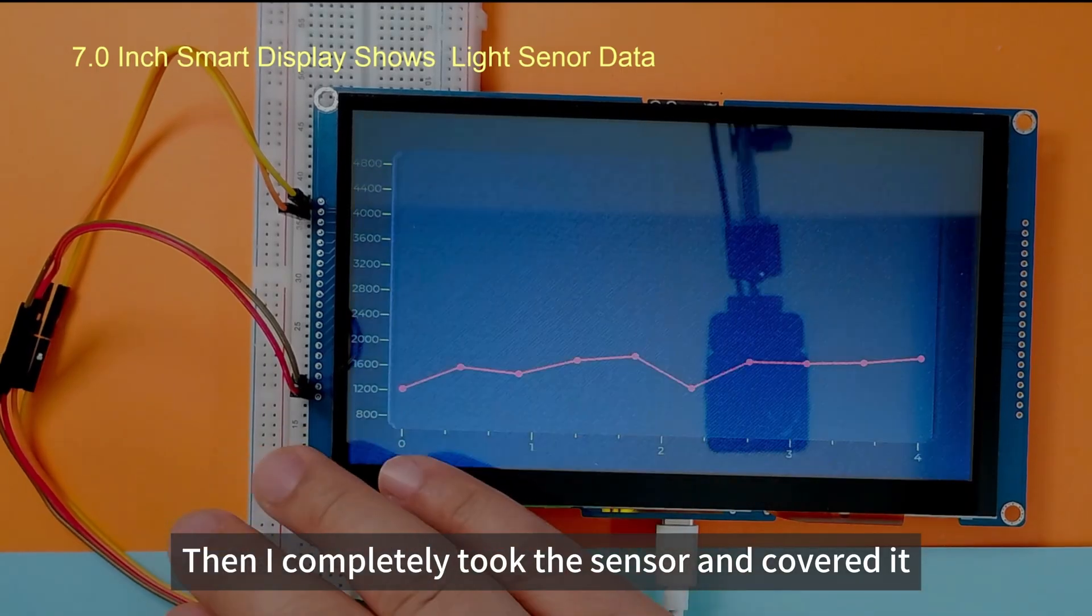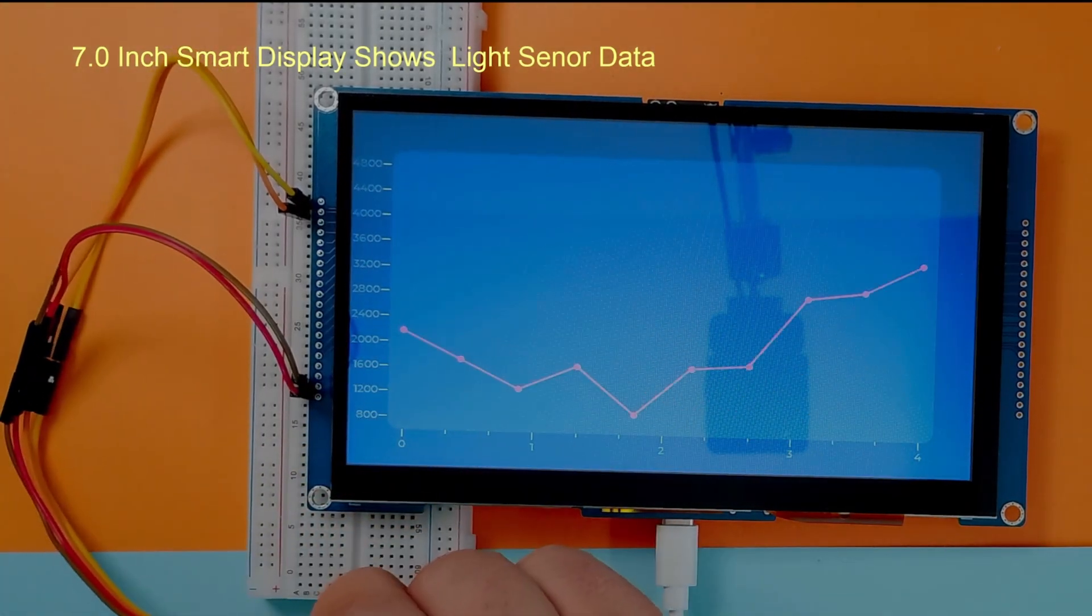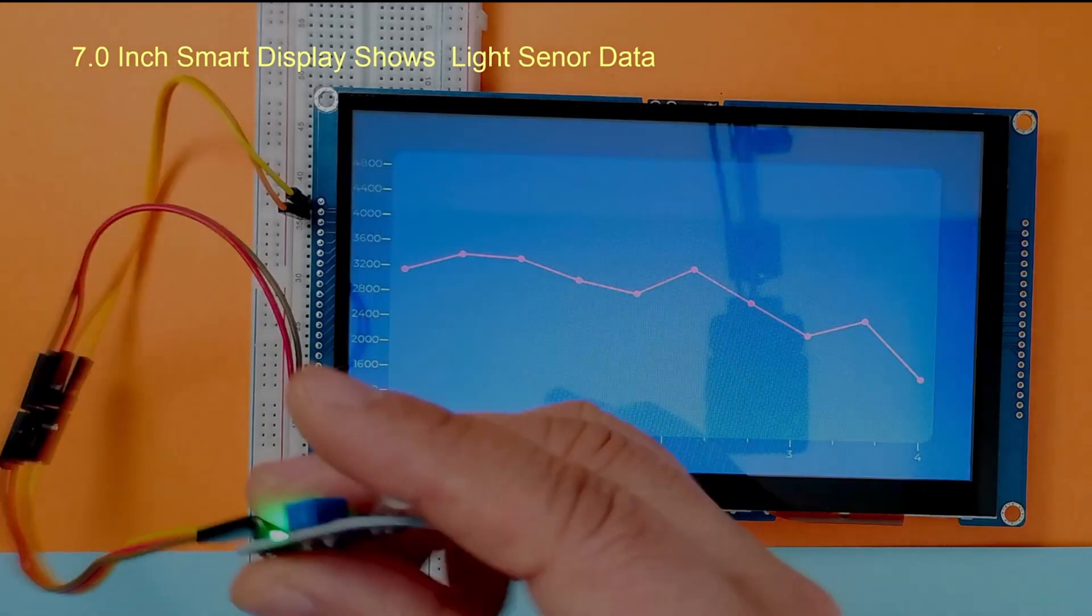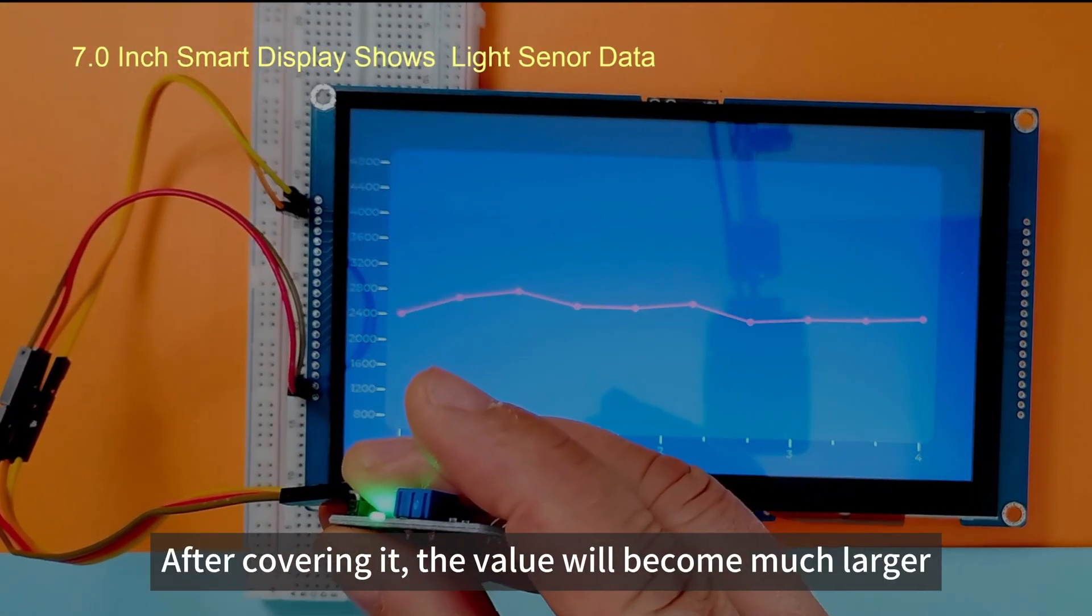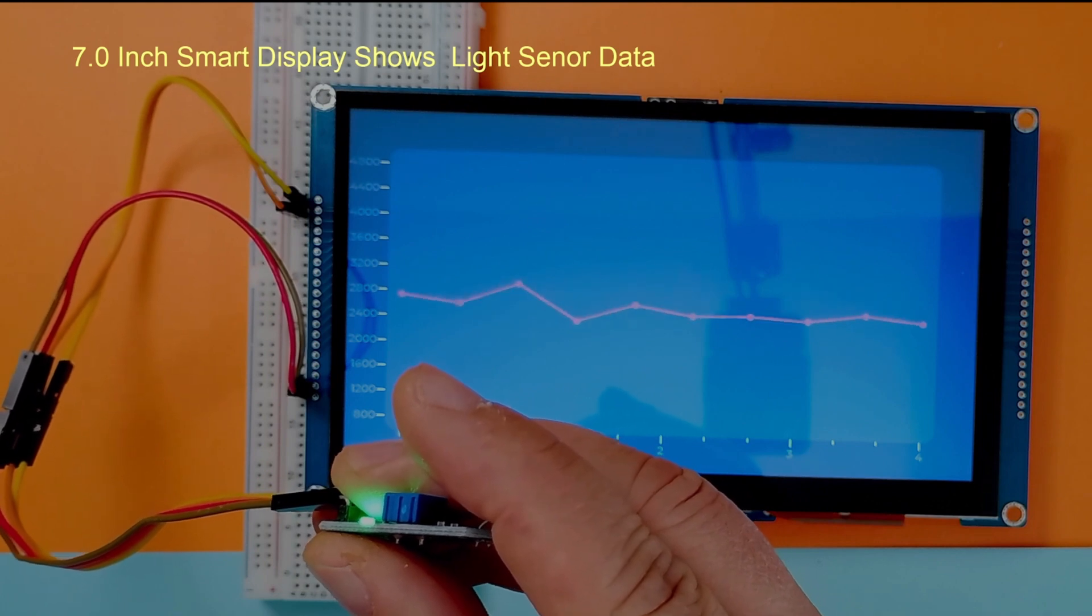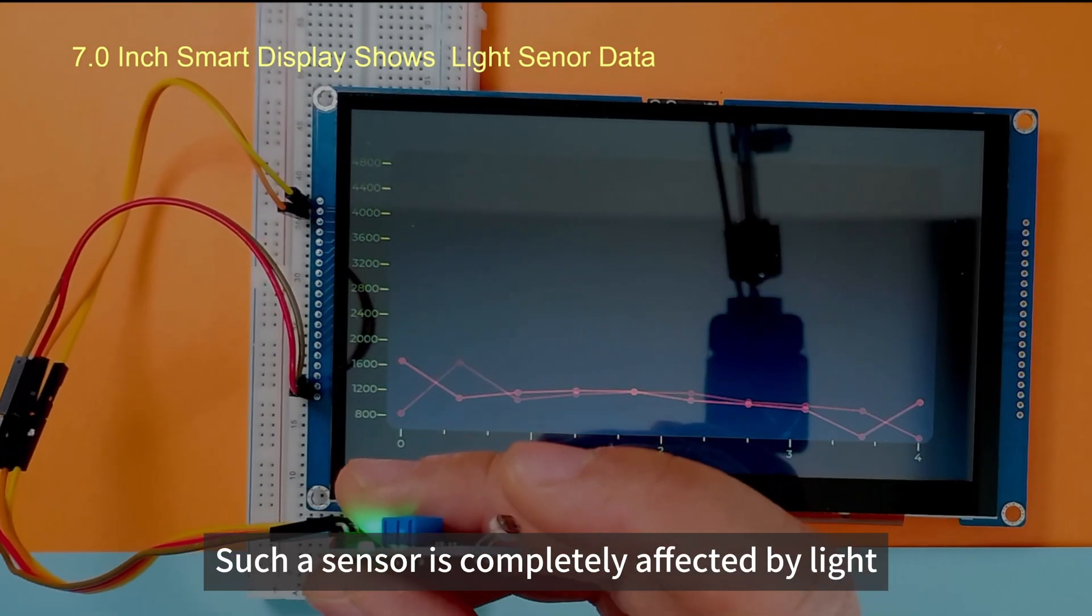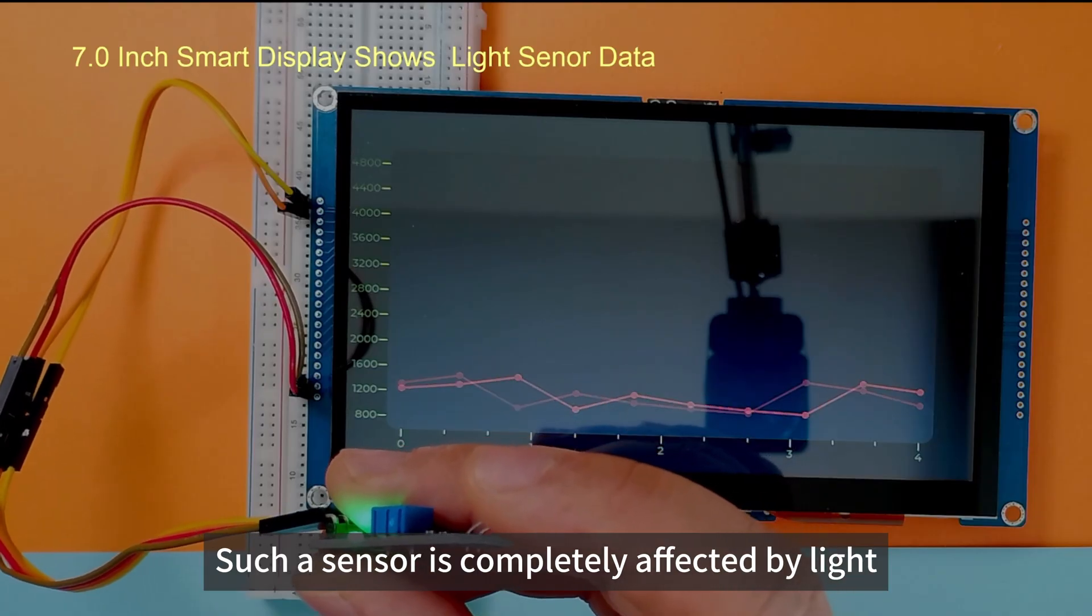Then I completely took the sensor and covered it. After covering it, the value will become much larger. Such a sensor is completely affected by light.